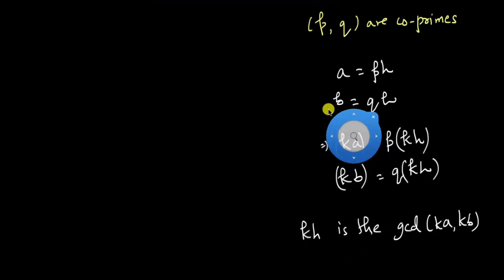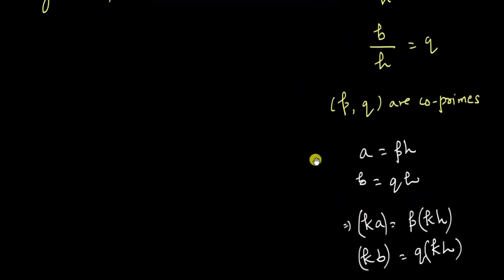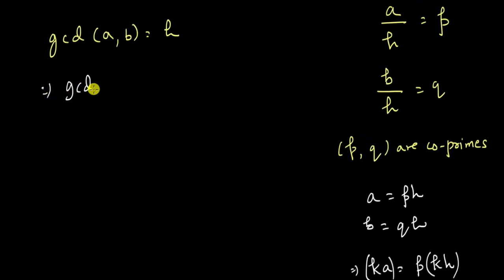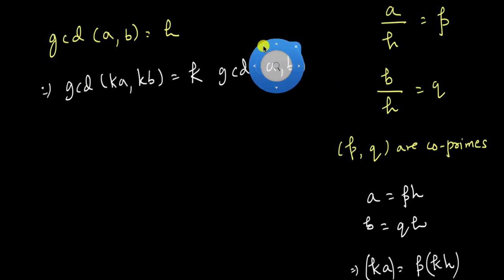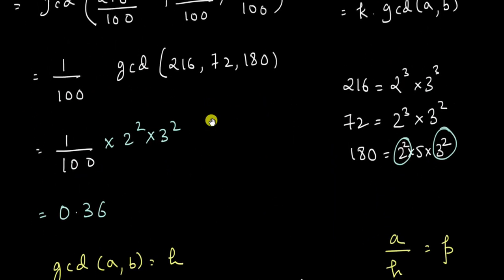kh is the GCD of ka and kb. That means what does that mean? That means GCD of ka and kb is k times h but what was h? h was the GCD of a and b. So this is how we can roughly prove this property and this is the property that we used.